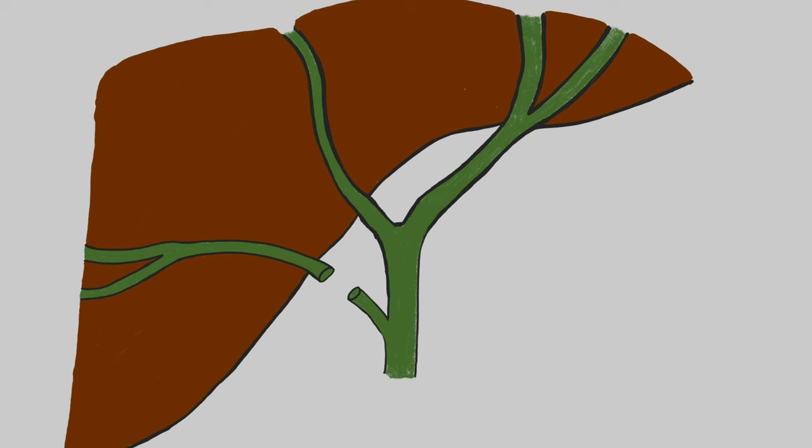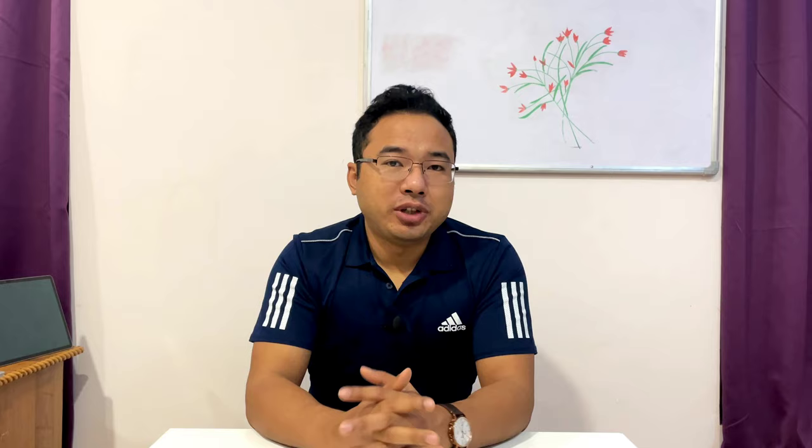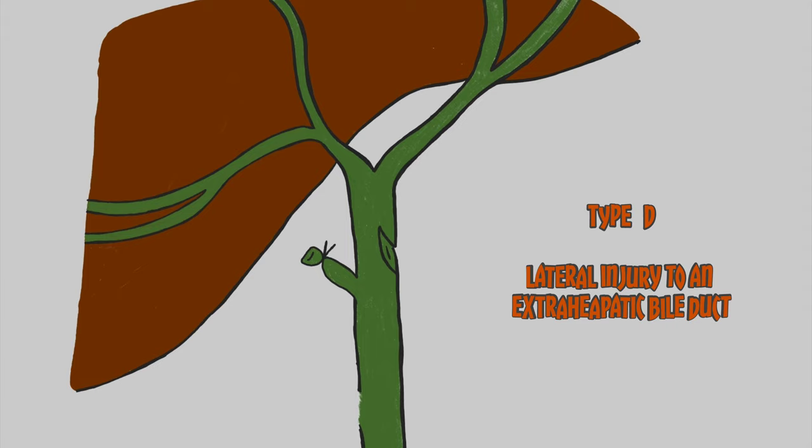Type C is transection of part of the biliary tree. There is going to be a leak, but it is a part of the biliary tree with no continuity, because it has been transected. Type D is a lateral injury to an extrahepatic bile duct.